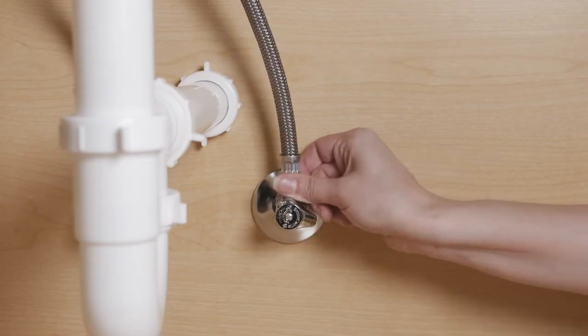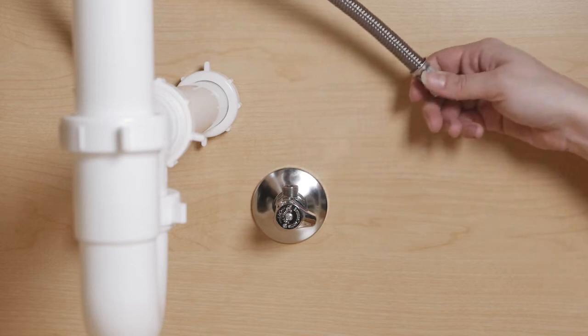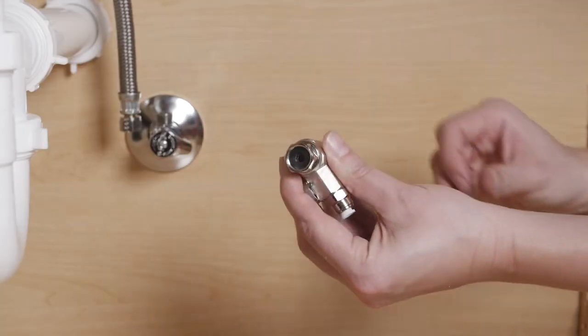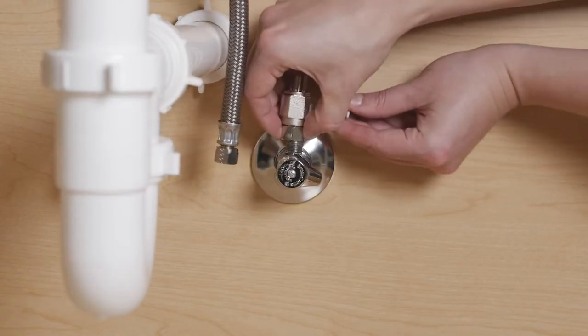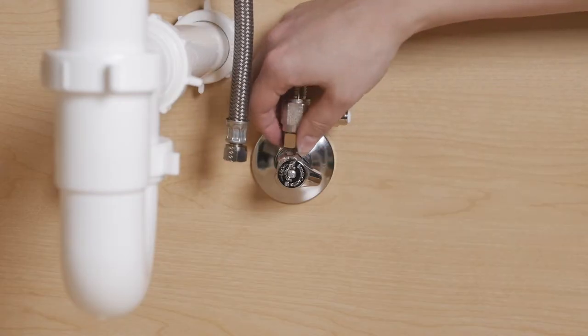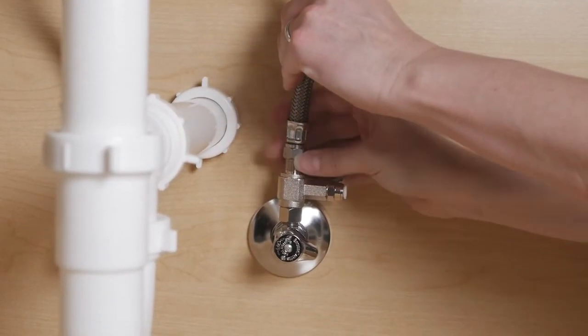Disconnect the metal cold water supply line from the shutoff valve. Insert the rubber washer into the provided T-valve and connect it to the cold water supply valve using the provided adapters if necessary. Reconnect the faucet water supply hose to the top of the T-valve.